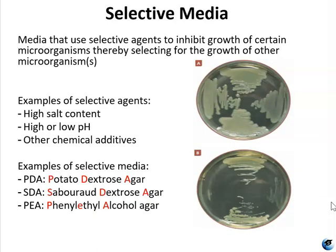Selective media actively inhibits the growth of unwanted microorganisms and supports the growth of the organism of interest by supplying nutrients and reducing competition. Selective agents include things like high salt, high or low pH, and dyes. The next three media we will talk about — PDA, SDA, and PEA — are all selective. In total, there are six types of media in this lab session classified as selective: PDA, SDA, PEA, EMB, MacConkey, and MSA.